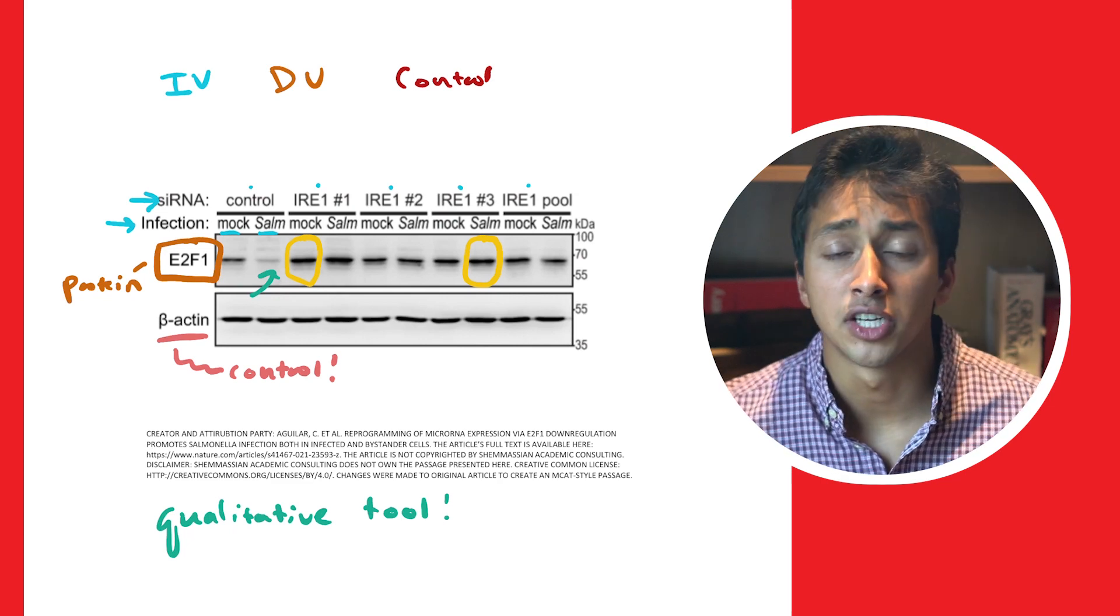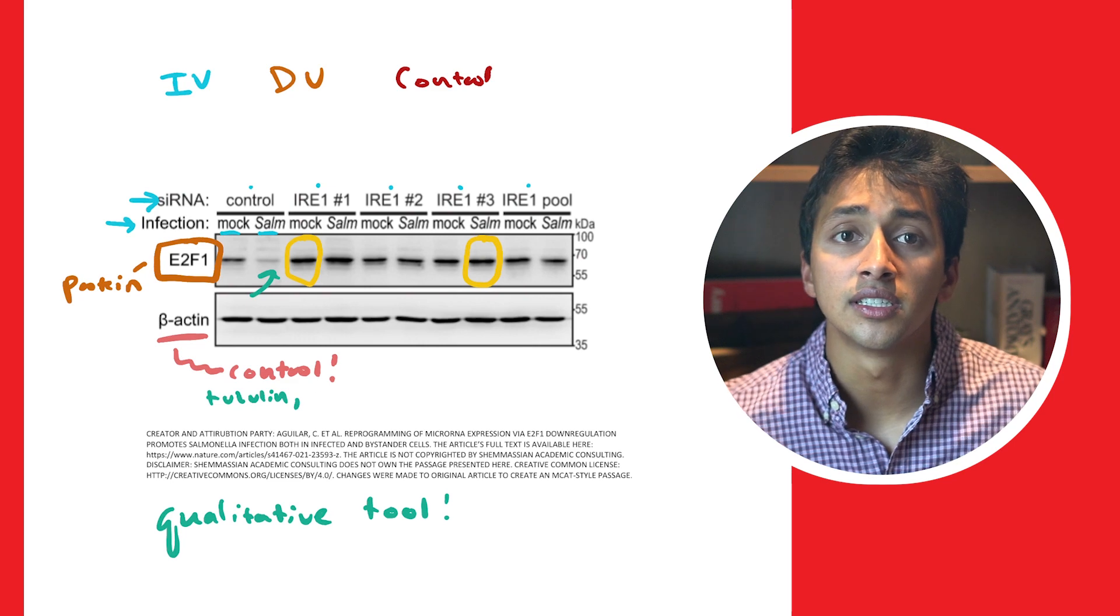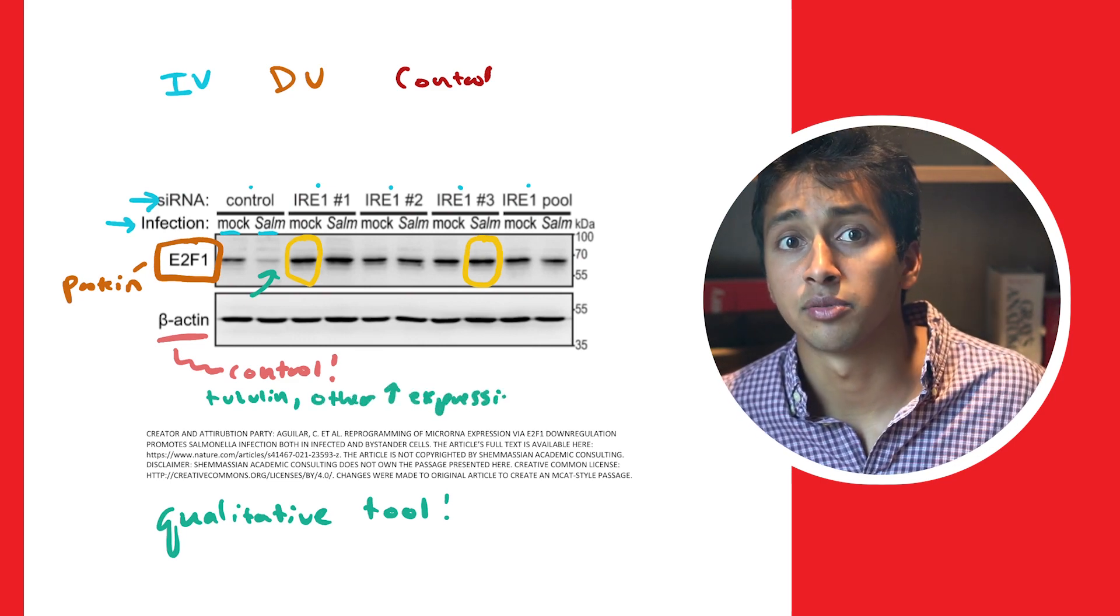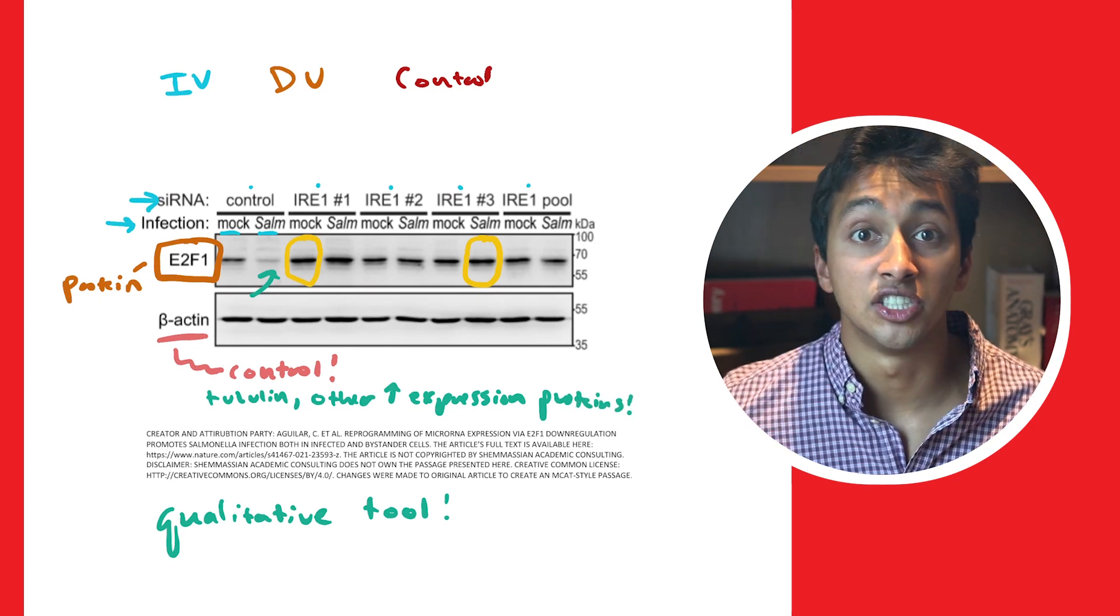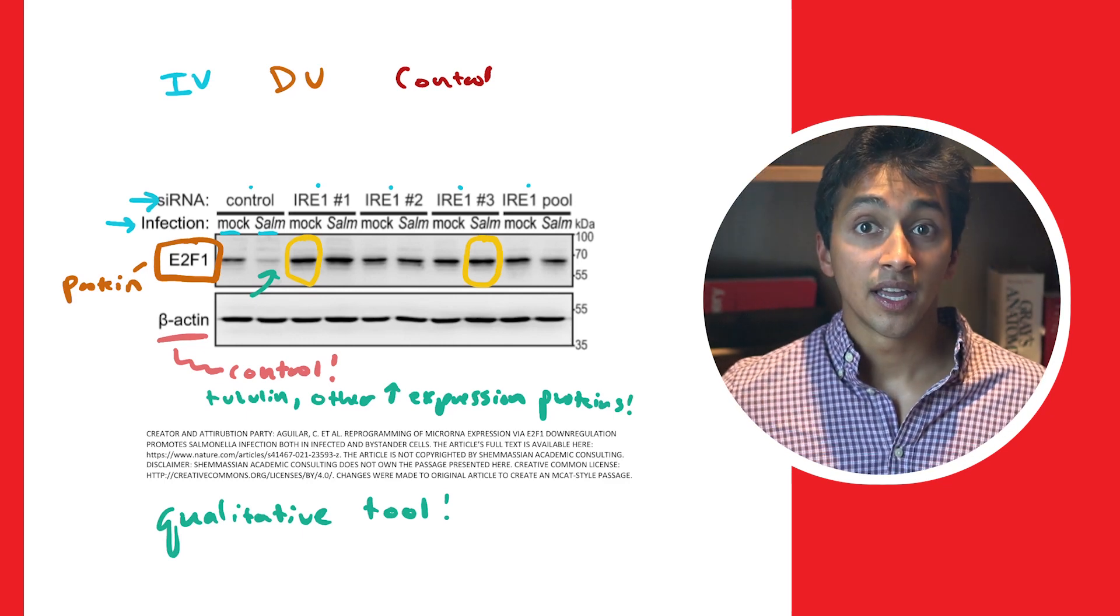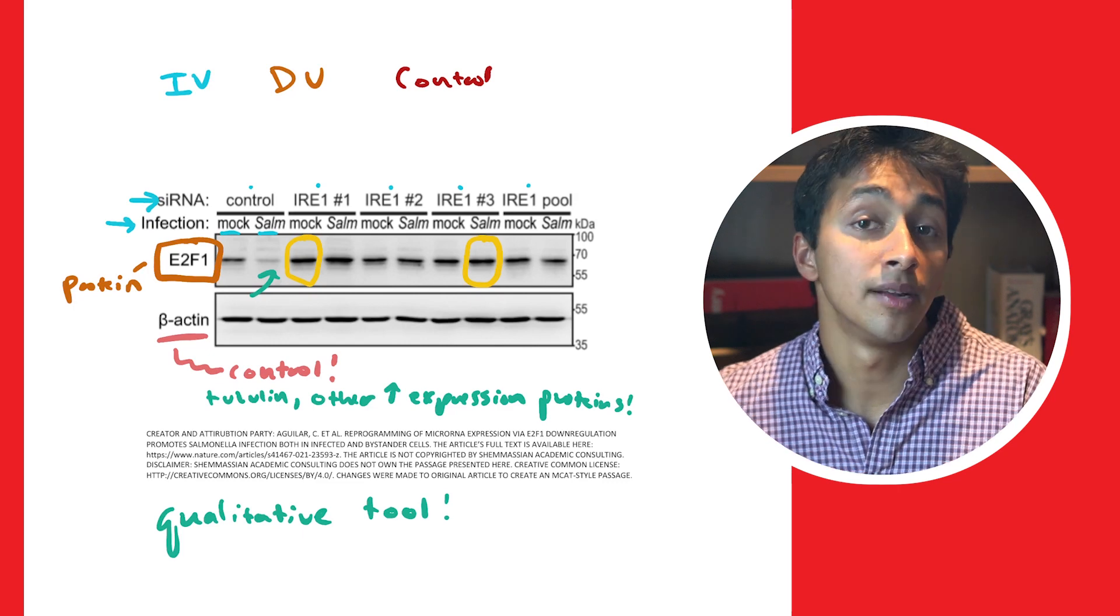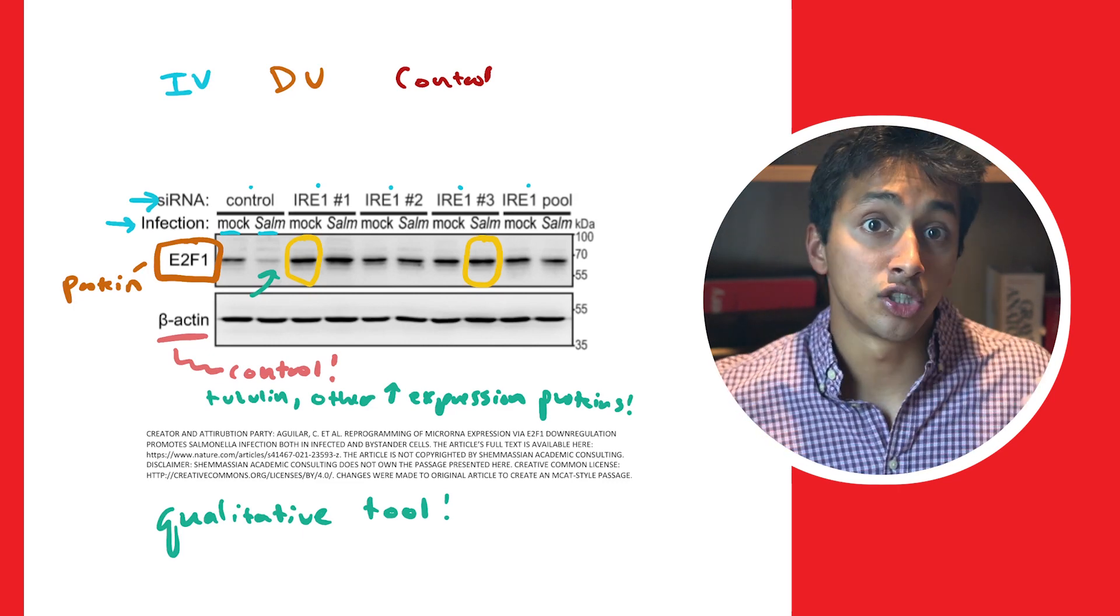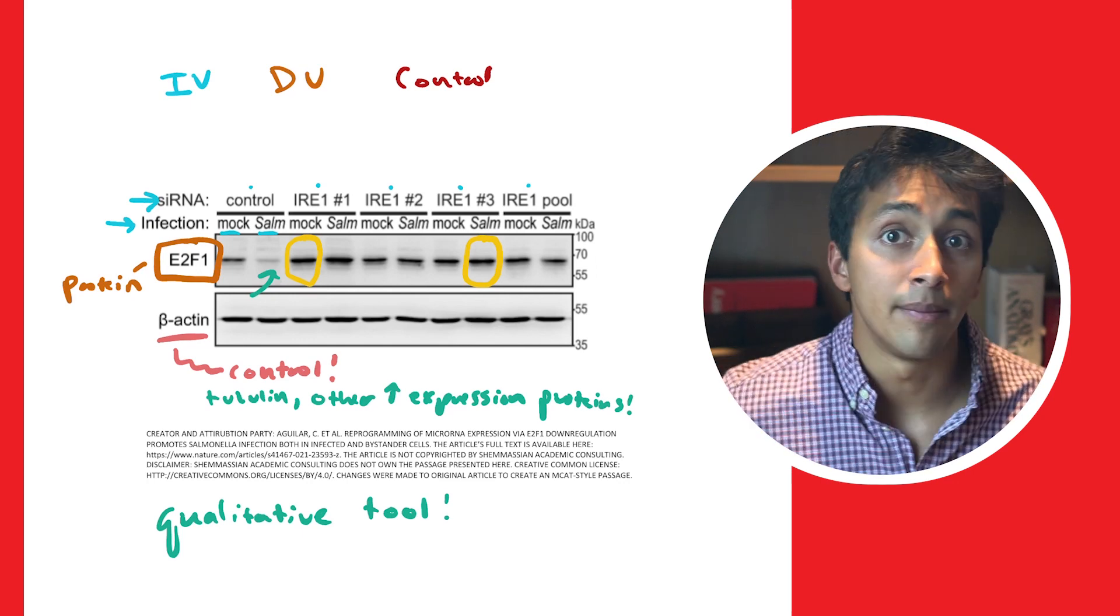Let's talk a little bit more about the controls you might see on a Western blot. Researchers often use proteins such as beta-actin, tubulin, or other highly expressed cellular proteins to ensure that the same amount of sample is loaded in each lane of the gel. These are proteins that are well known and behave predictably. In other words, to confirm that our differences in E2F1 are due to the independent variable, the experimenters can control for human error and ensure that the same amount of protein was loaded in each lane of the gel by including that beta-actin control.